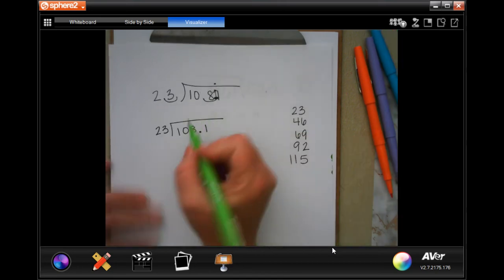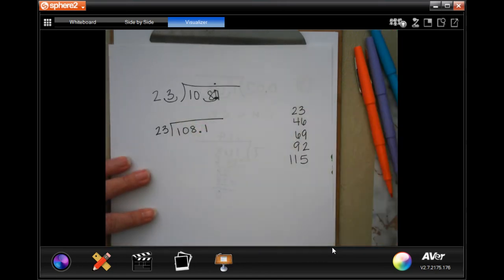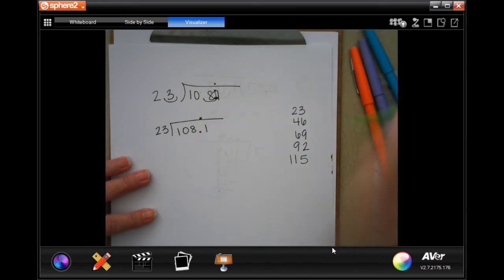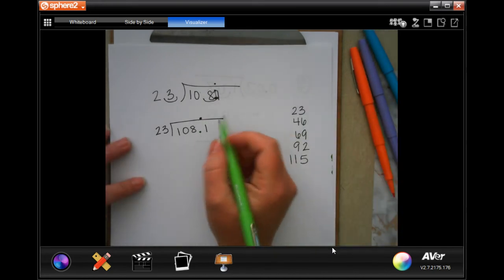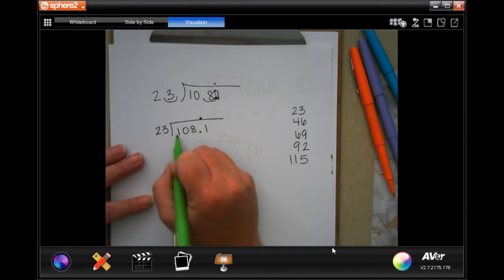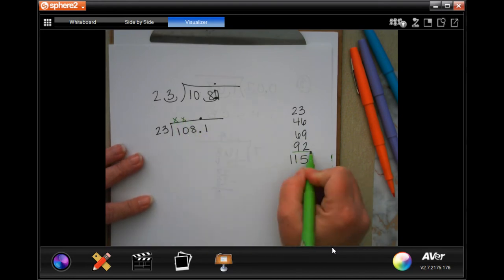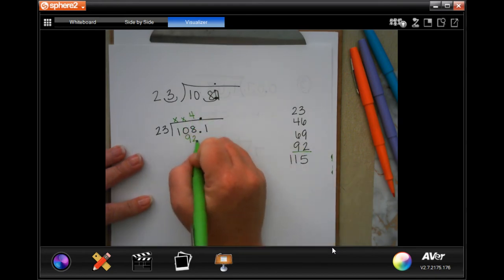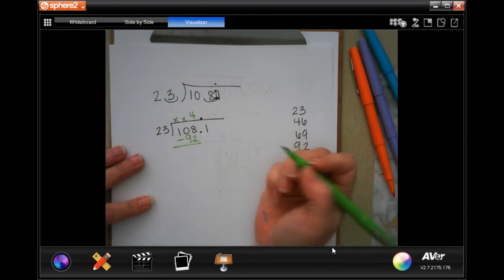So now 23. Oh, well, first, definitely need to push our decimal up. It stays there. Now we just need to make sure we line up our numbers. So 23 is not going to go into one. It's also not going to go into 10. It'll go into 108. Looks like four times. That was 92. Subtract. When I subtract eight minus two is six and 10 minus nine is one.